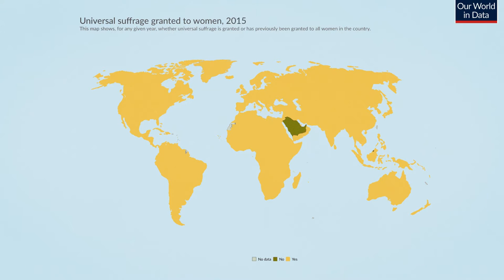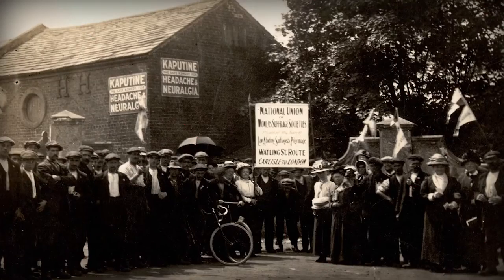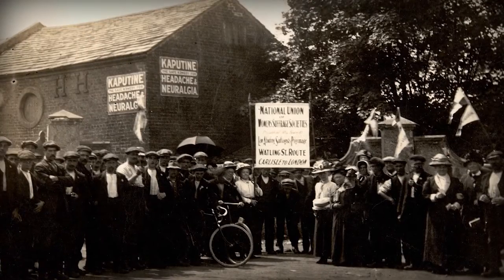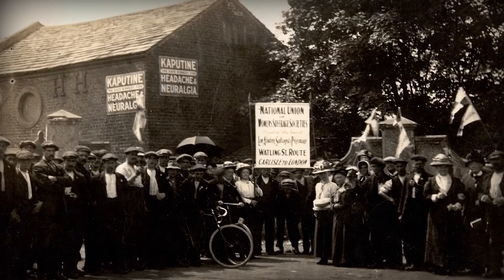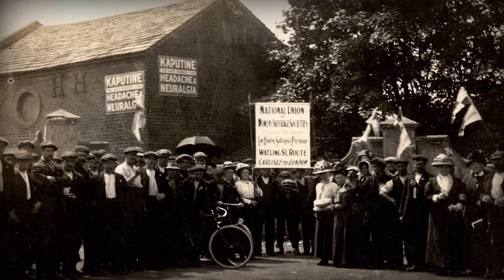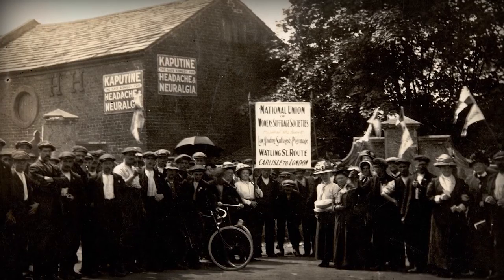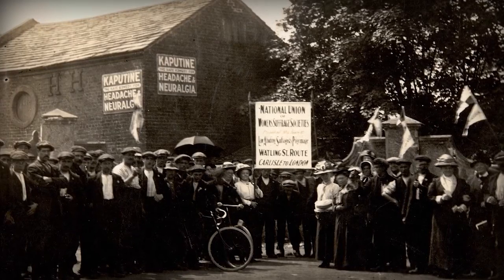But it was only in the early 20th century that full women's suffrage really started to come into effect. It began in New Zealand and Finland and slowly spread. In every case, women's suffrage was only achieved because women and some male allies fought for it.